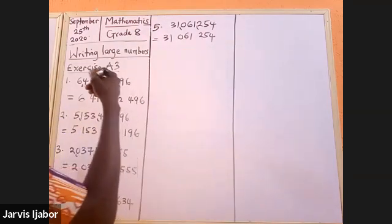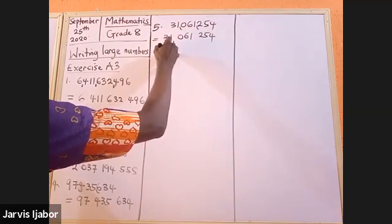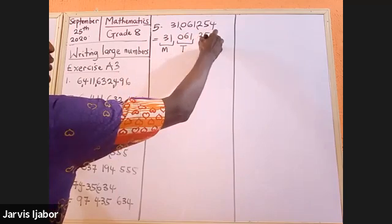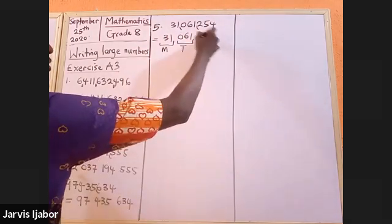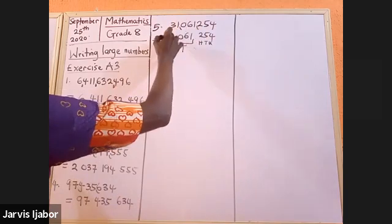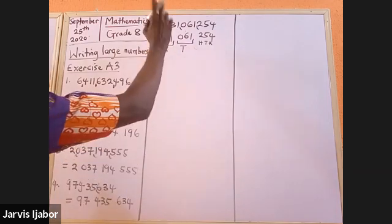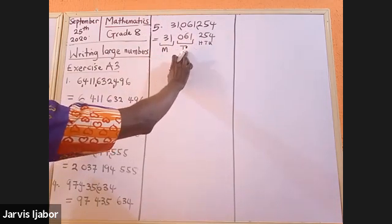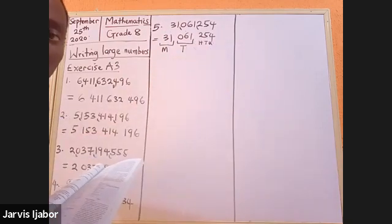Now, look at this. This region is called million. This region is called thousand. Then hundred, tens, and units. I hope you know that hundred, tens, and units is replicated here again. So it will be: thirty-one million, sixty-one thousand, two hundred and fifty-four.